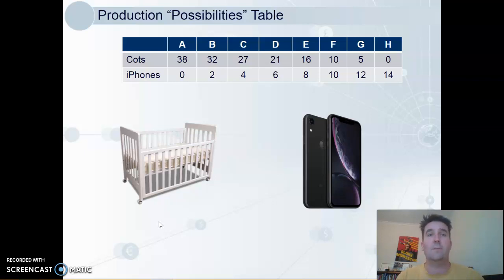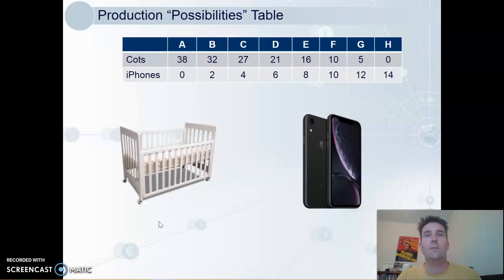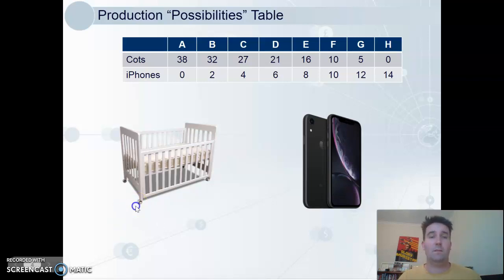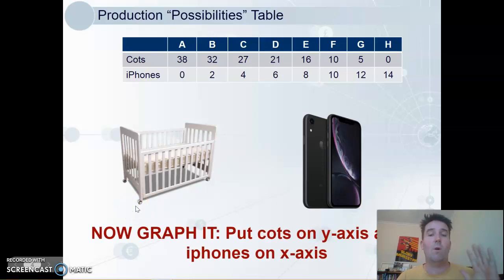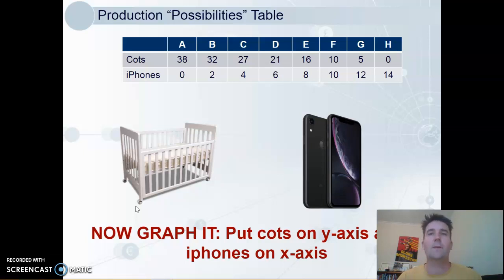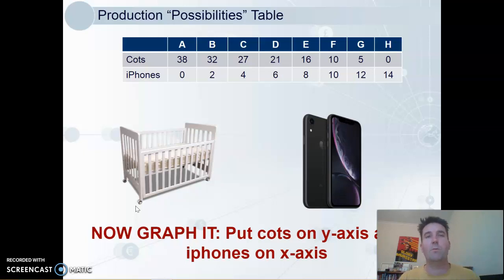We have data here for how many we can possibly produce at each combination, A to H. I want you to graph this with cops on the Y-axis and iPhones on the X-axis. If you do it roughly to scale, that will be fine. It needs to be nice and big, so maybe like a third of a page. So pause now and have a look at that.